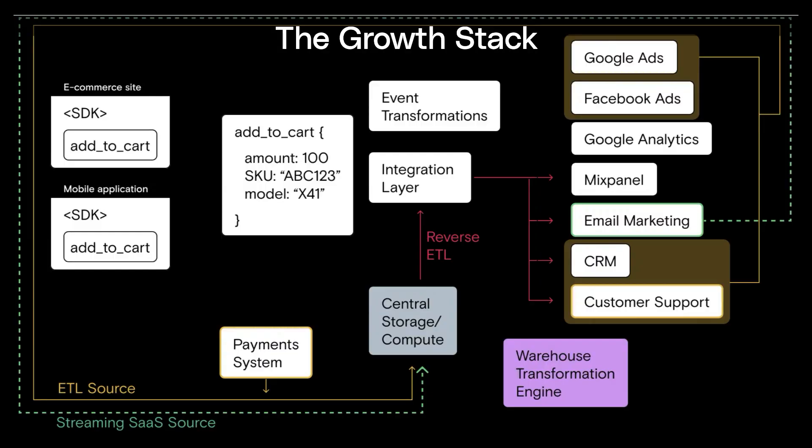That usually becomes pretty acute at a company that's growing really fast or has reached a certain level of complexity in their tech stack. This is when you're ready for what we call the growth stack. The punchline about the growth stack is that you need a central repository for all of the data that lives in all of those different SaaS tools — that is the modern data warehouse or data lake.